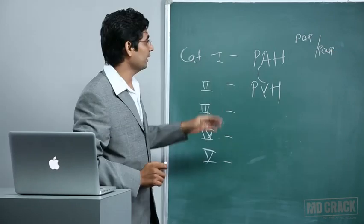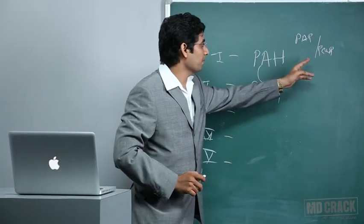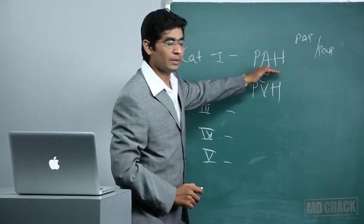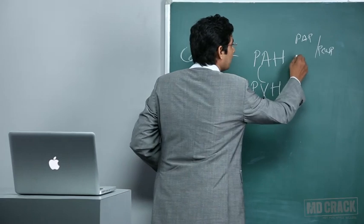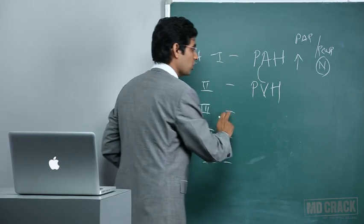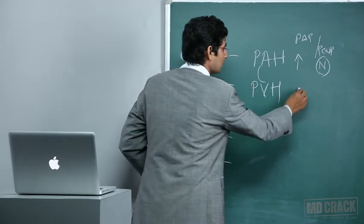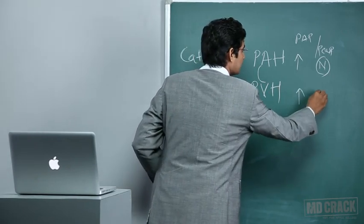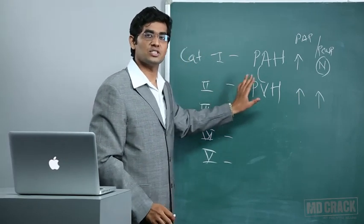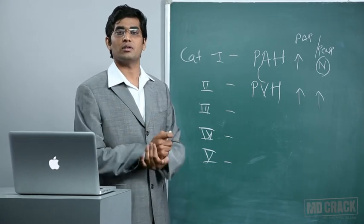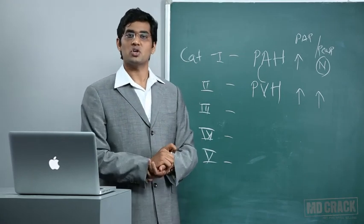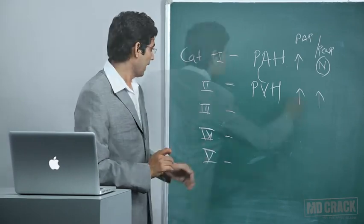In pulmonary arterial hypertension, PAP will be high and PCWP will be normal. In pulmonary venous hypertension, both PAP and PCWP will be high. The causes of pulmonary venous hypertension are diseases of the left side of the heart — such as severe mitral stenosis or diastolic dysfunction.